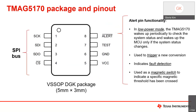The TMAG 5170 is offered in an 8-pin VSSOP DGK package with pins for the SPI interface signals, an alert pin, supply and ground pins, and a test interface pin that should be grounded. The multifunctional alert pin can be used to enable low power operation, initiate a new conversion, indicate fault detections, and trigger alerts when a magnetic or temperature threshold has been crossed.